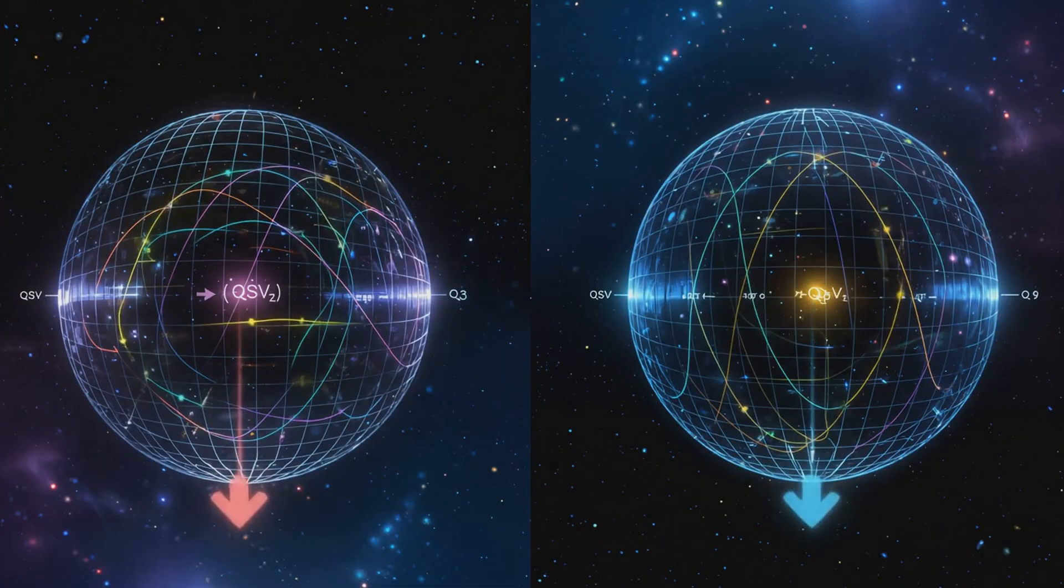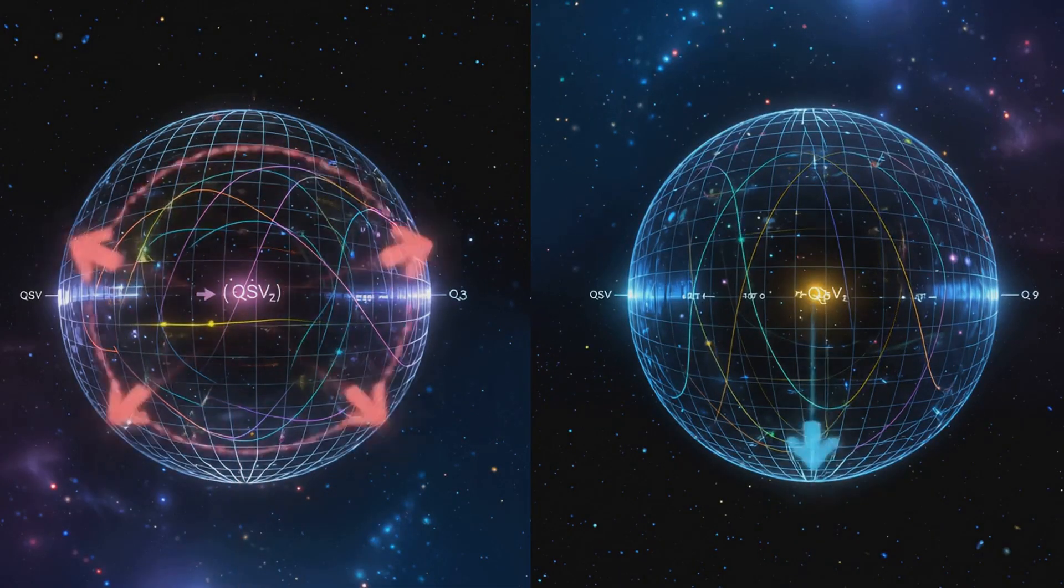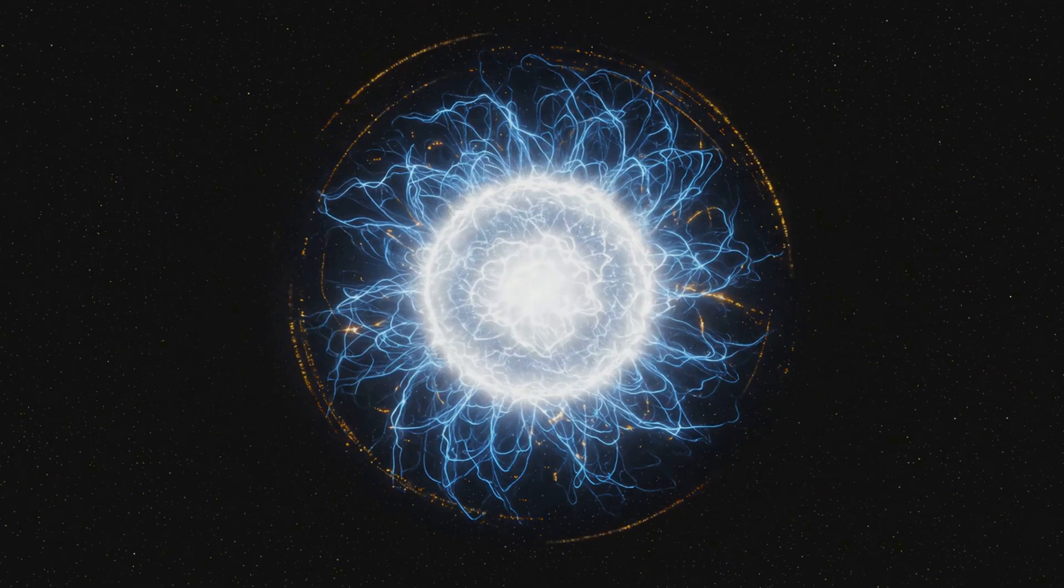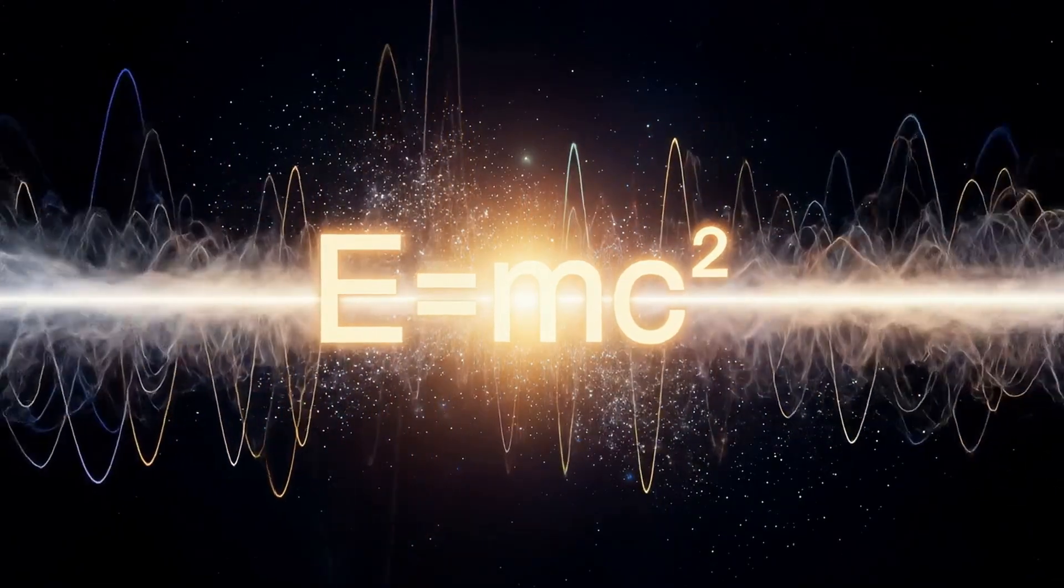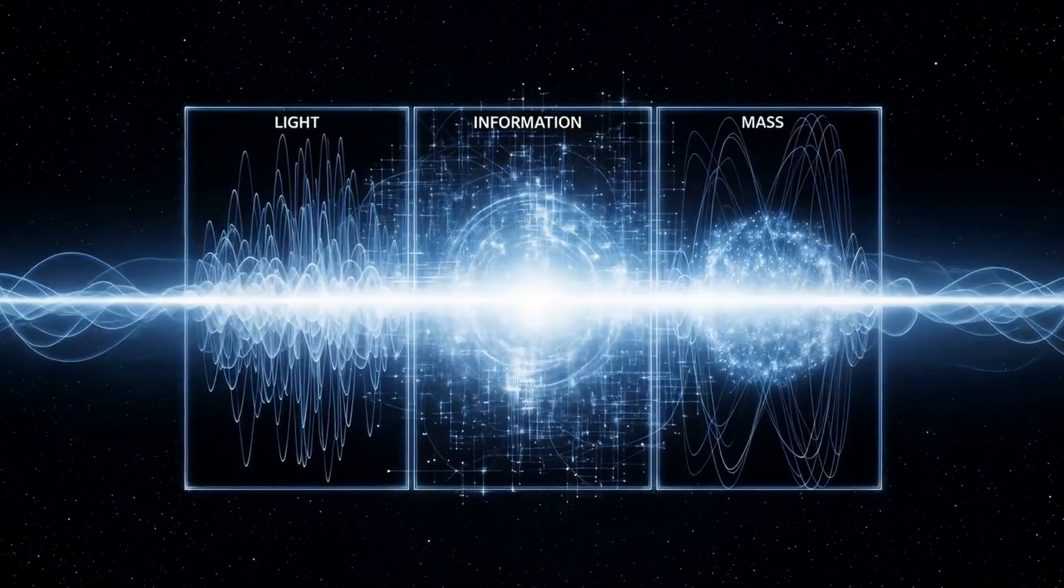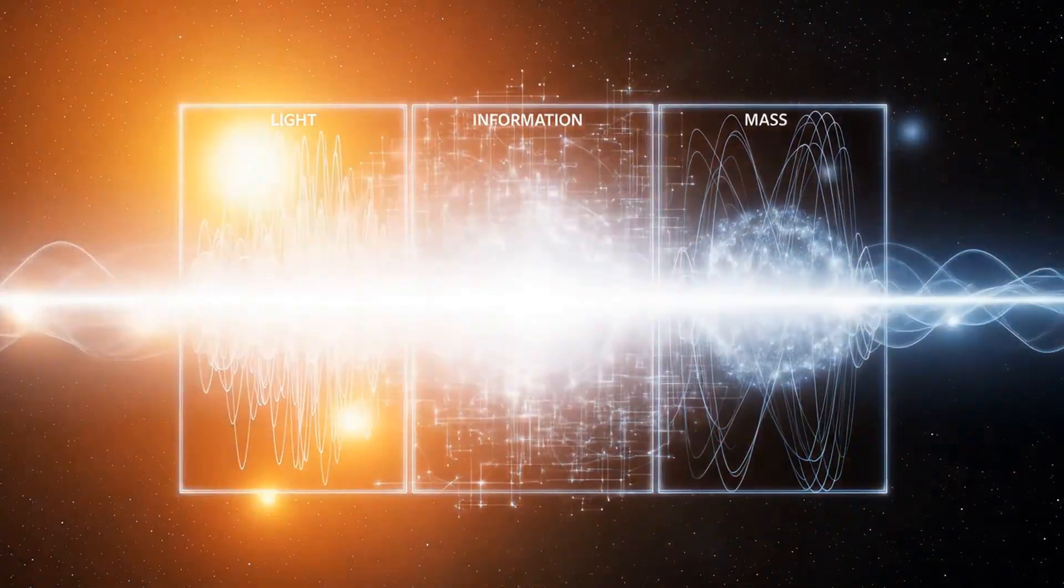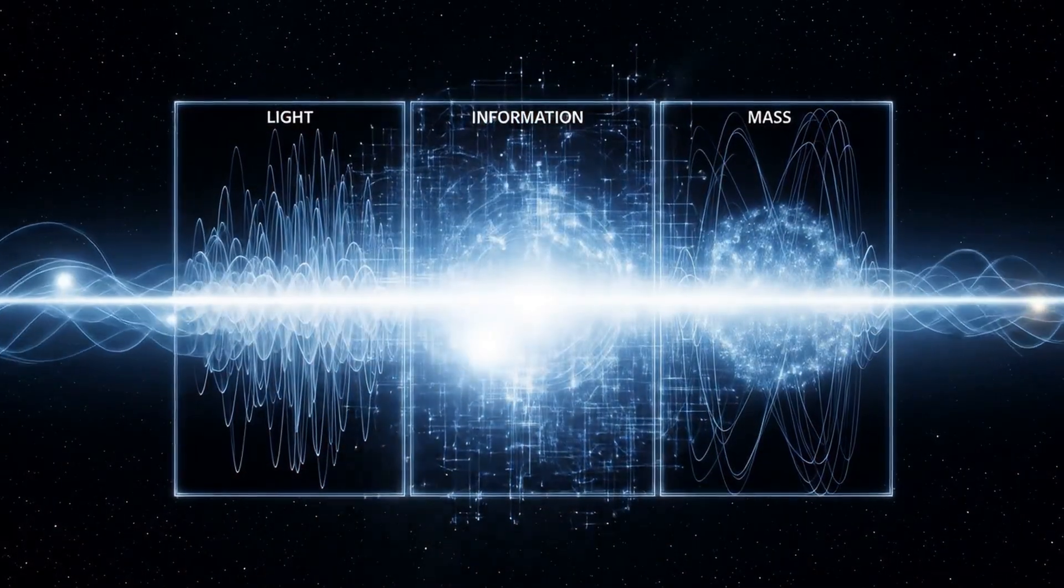Planck's constant times frequency gives energy in terms of wave motion. Reduced Planck's constant times angular frequency gives energy as information. Both are equal to mass times the speed of light squared. Thus, light, information and mass are not different. They are the same thing.